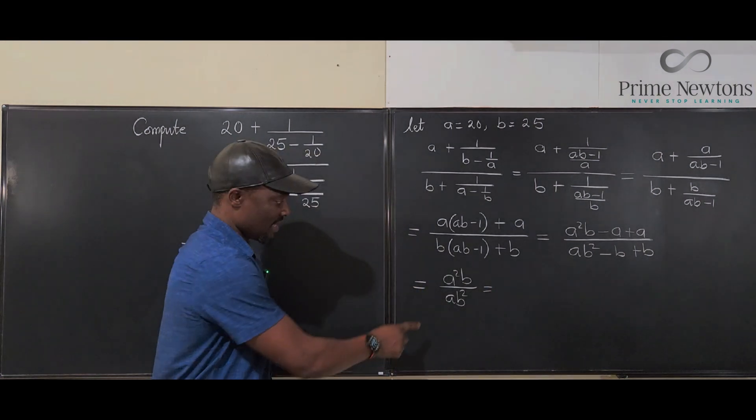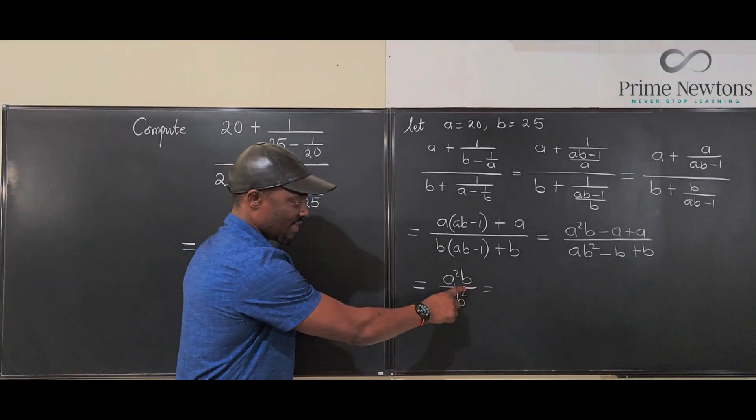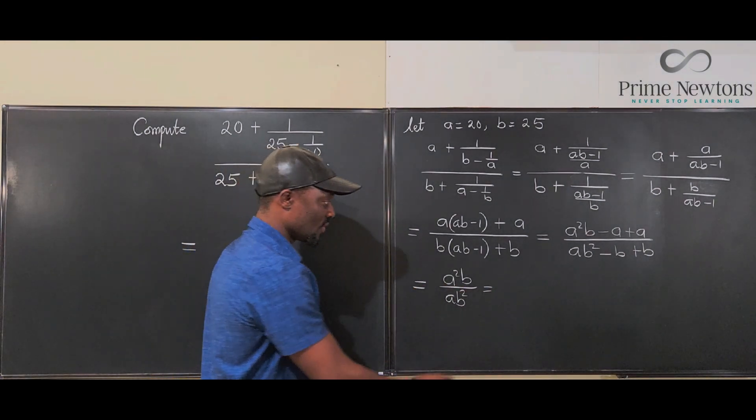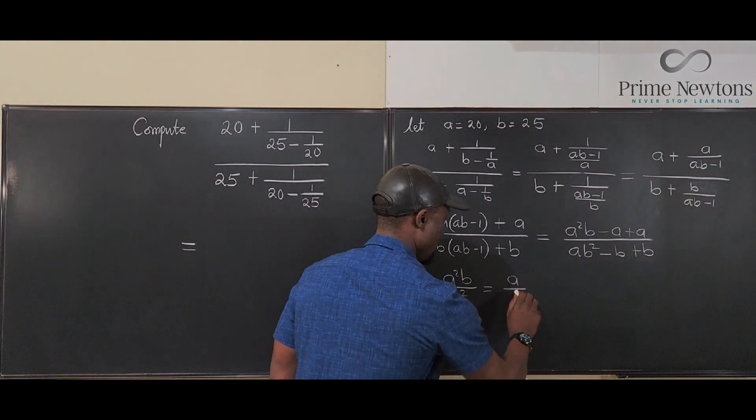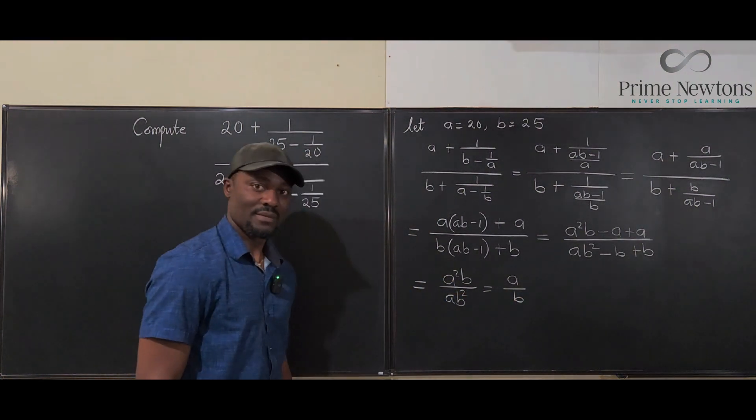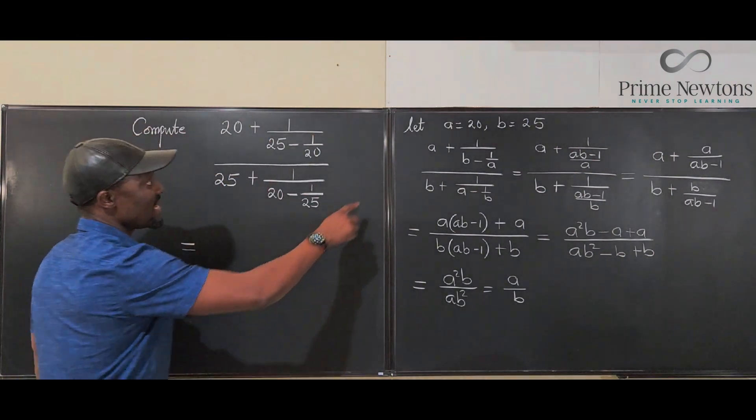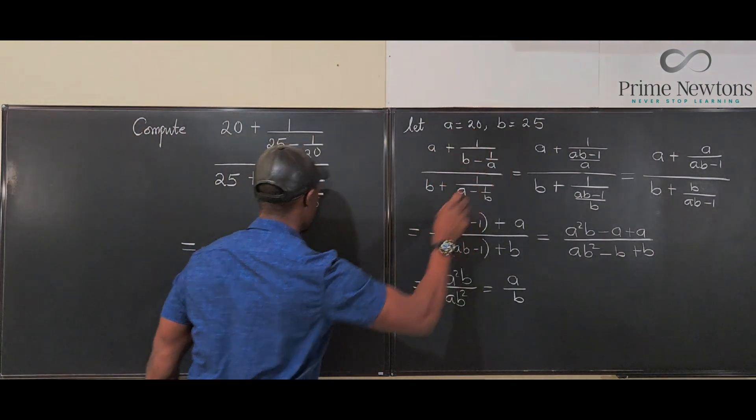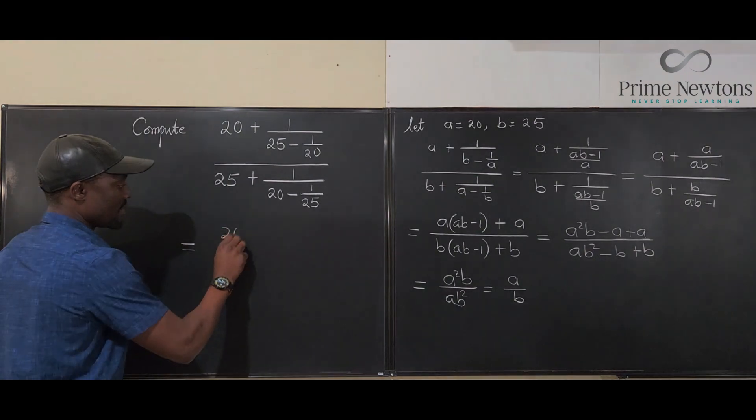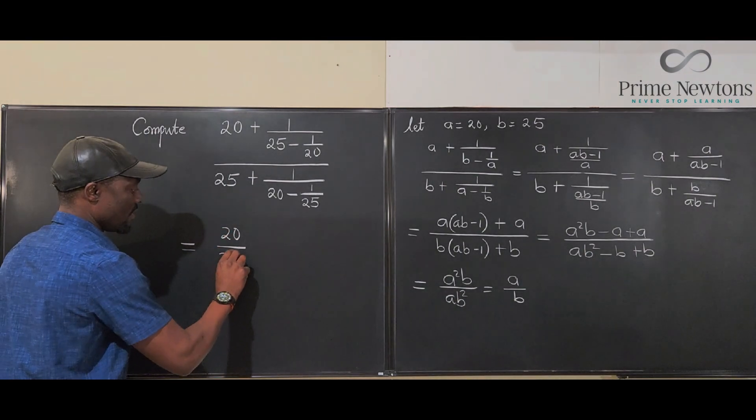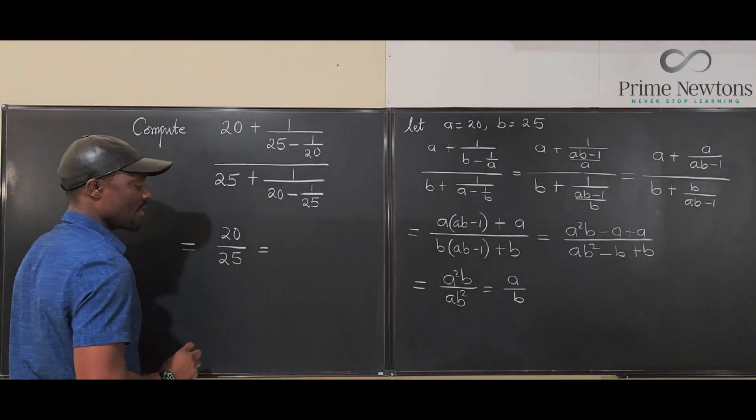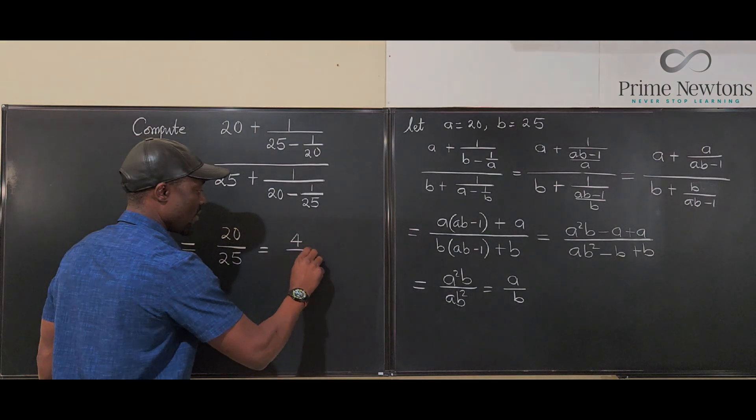Well, this A cancels one of these A's, this B cancels one of these B's so that your final answer is A over B. So the whole problem is basically A over B, 20 over 25, which is 4 over 5.